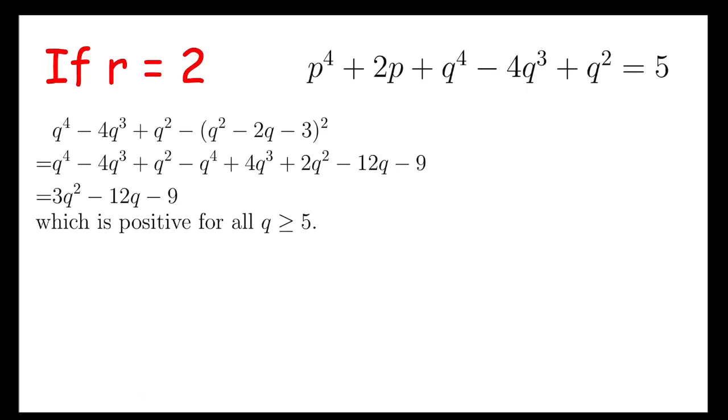Now, with this result, I can tell that p^4 + 2p, plus that particular quartic polynomial, is greater than 20. 20 comes from the fact that p is prime, and so p is at least 2, which means p^4 + 2p must be over 20.